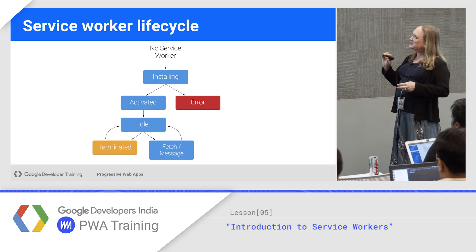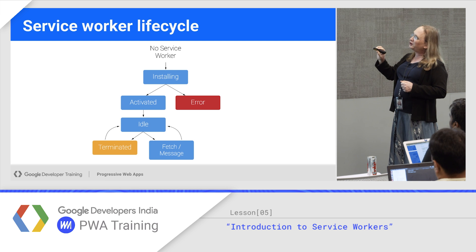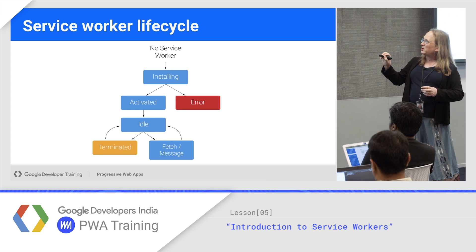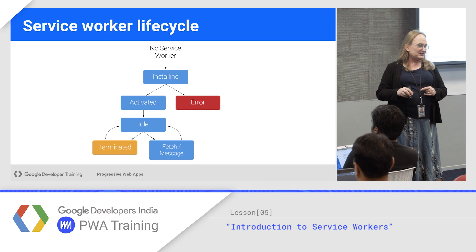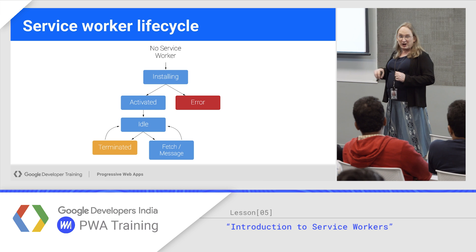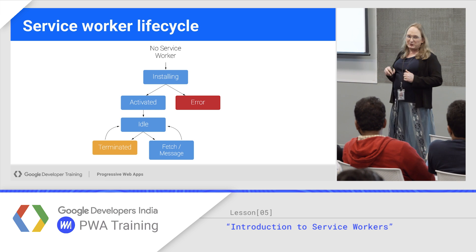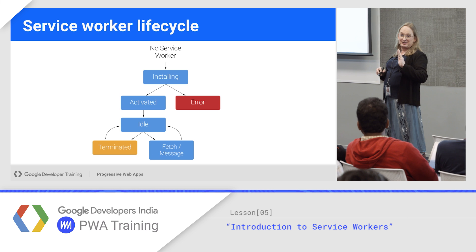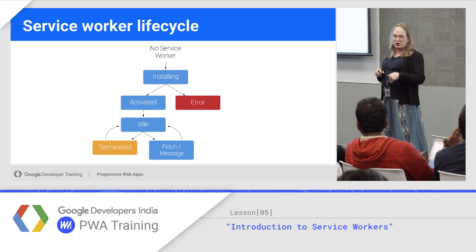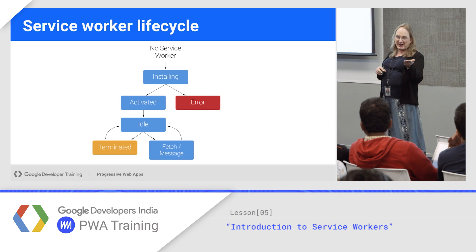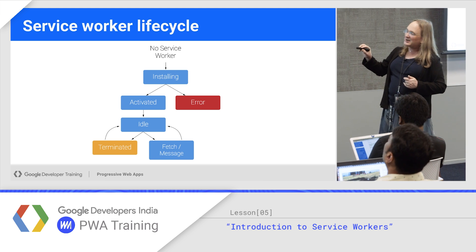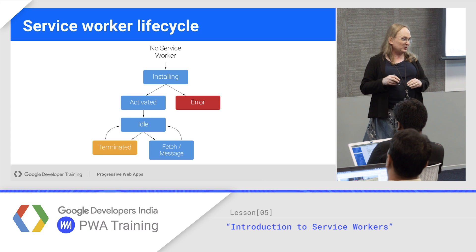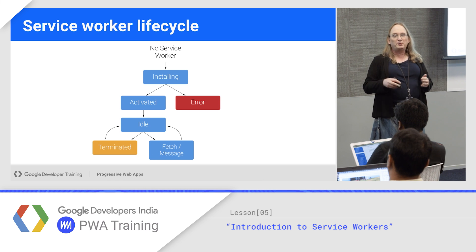When you first start, you don't have a service worker. In your code, you'll create one — that's the installing state. At the end of this state, the service worker fires an installed event into its own script, and that script can start doing work. Usually that's when you build the cache. It's not yet active and not yet controlling your network chain. It won't become active until you make a special call or until the user reloads the app. Now it becomes activated — in the control chain. There's an activated event where you can do things like clean up the cache or pick up dynamic data.